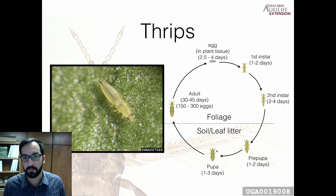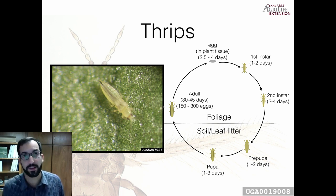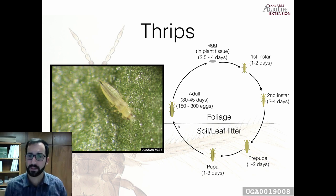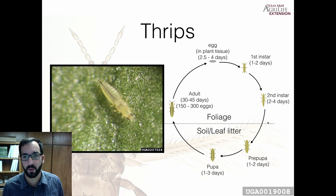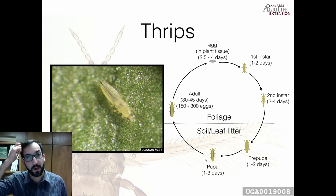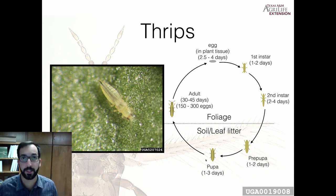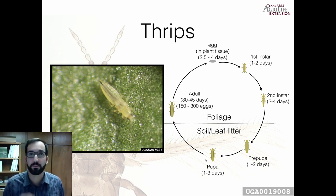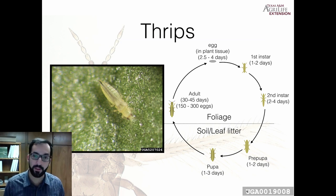The prepupa and pupa become winged adults — only adults have wings; the immatures do not. If you spray an insecticide and it only hits the foliage, all the pupa and prepupa can emerge within the next week and you have a brand new thrips population. That's why it's important to spray twice — at a seven or 14-day interval — in order to break this life cycle.